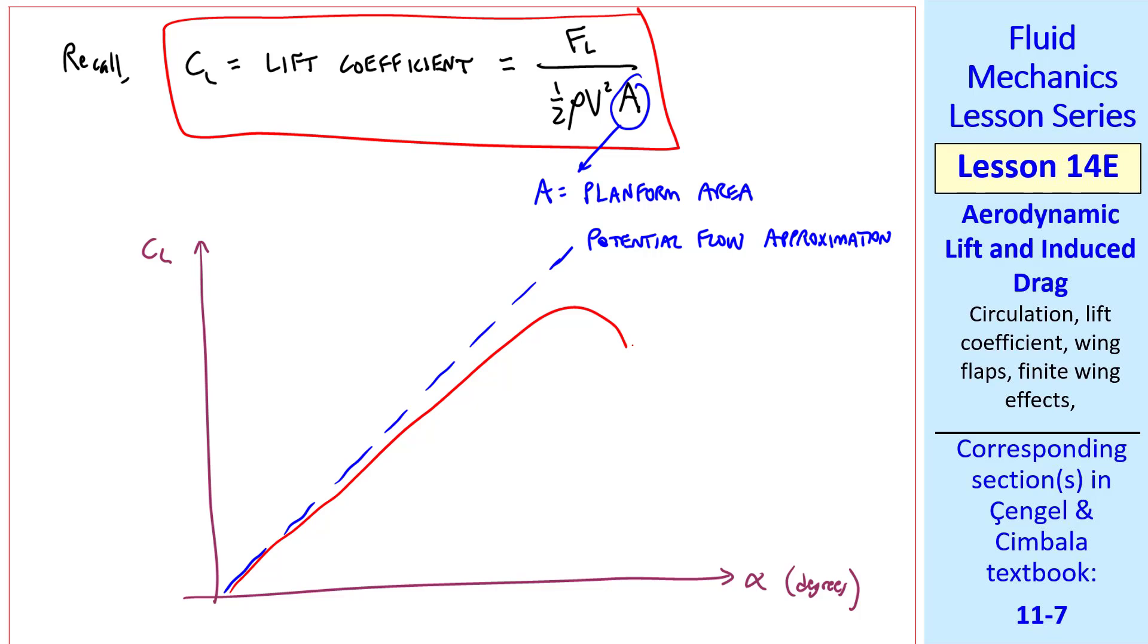And experimental data follow this line very nicely, up to the maximum lift coefficient point, beyond which we have airfoil stall. Beyond that point, FL goes down, and FD goes up, so pilots usually try to avoid this region. Wing stall has been the source of many tragic accidents over the years.